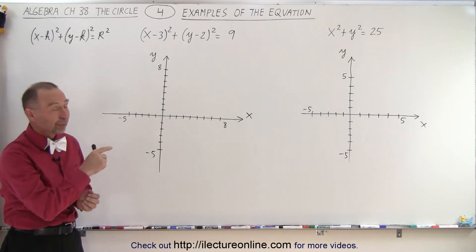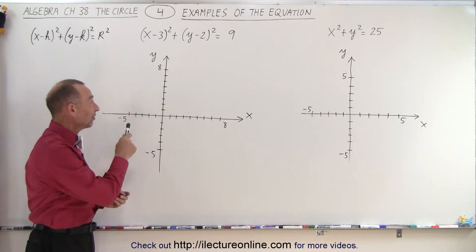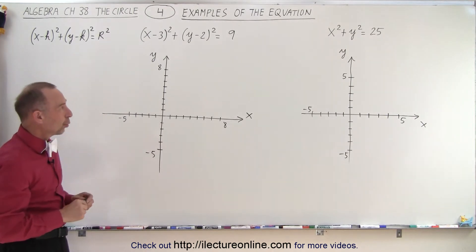You can tell that the one on the right side represents a circle with the center at the origin. The one on the left side represents a circle where the center is not at the origin.